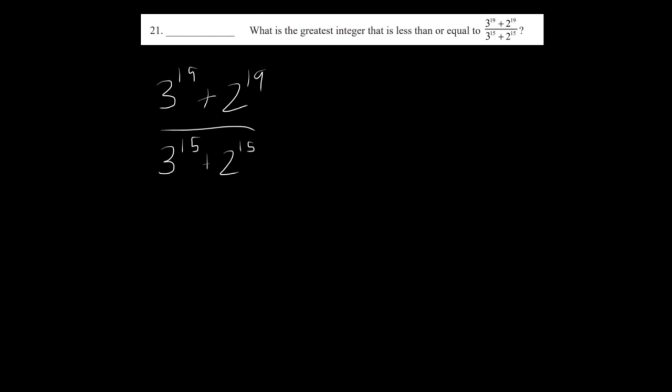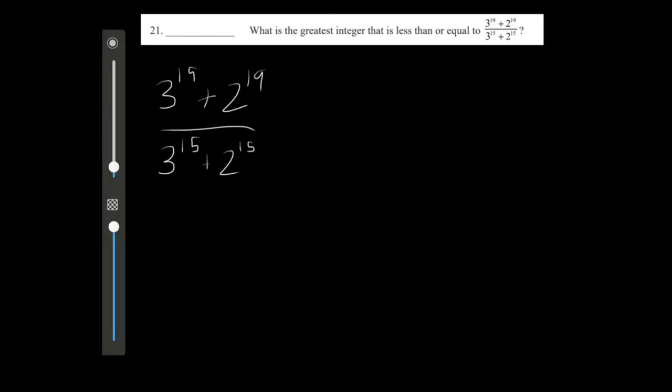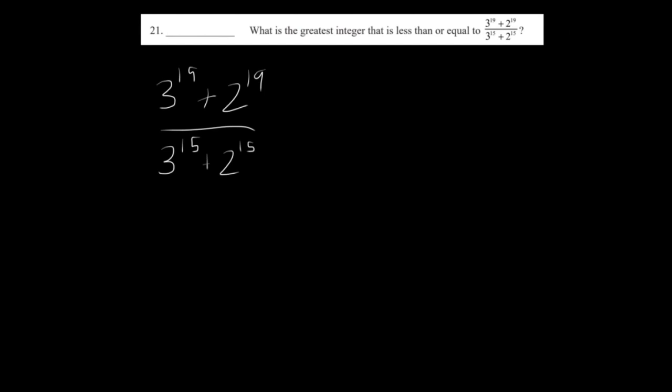The key in this problem is to see that you can split up 3 to the 19th and 3 to the 15th, right? We have a, b to the c. Let's give an example here. It's the same thing as a to the c times b to the c. So we can split up 3 into 2 times 1.5. So that would be our a and b in this case. Let's go ahead and do that.